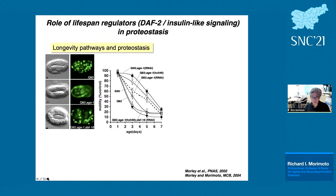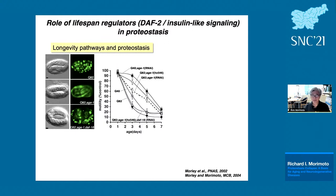We used this system to do discovery — asking what underlying genetics control this. We reasoned that genes involved in longevity in C. elegans might protect the animal against proteotoxic stress. Cynthia Kenyon and Gary Ruvkun had identified the insulin signaling system, conserved in all organisms, as critical in longevity. We crossed Q82 animals with age-1 mutants that confer longevity, and dramatically, the aggregates were gone and the protein shifted from aggregate to soluble.